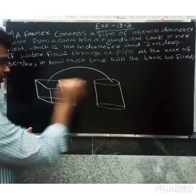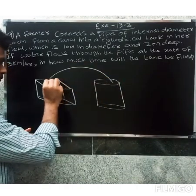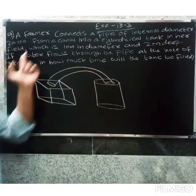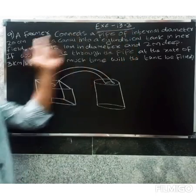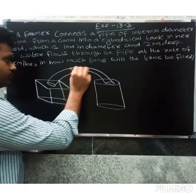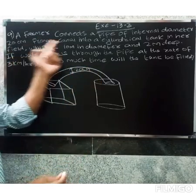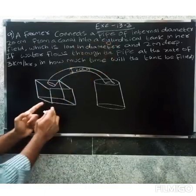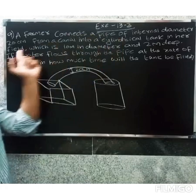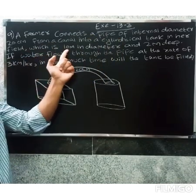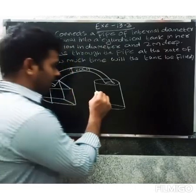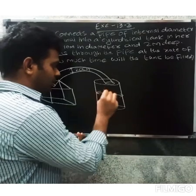A farmer connects a pipe of internal diameter 20 centimeters from a channel into a cylindrical tank. The cylindrical tank is 10 meters in diameter.